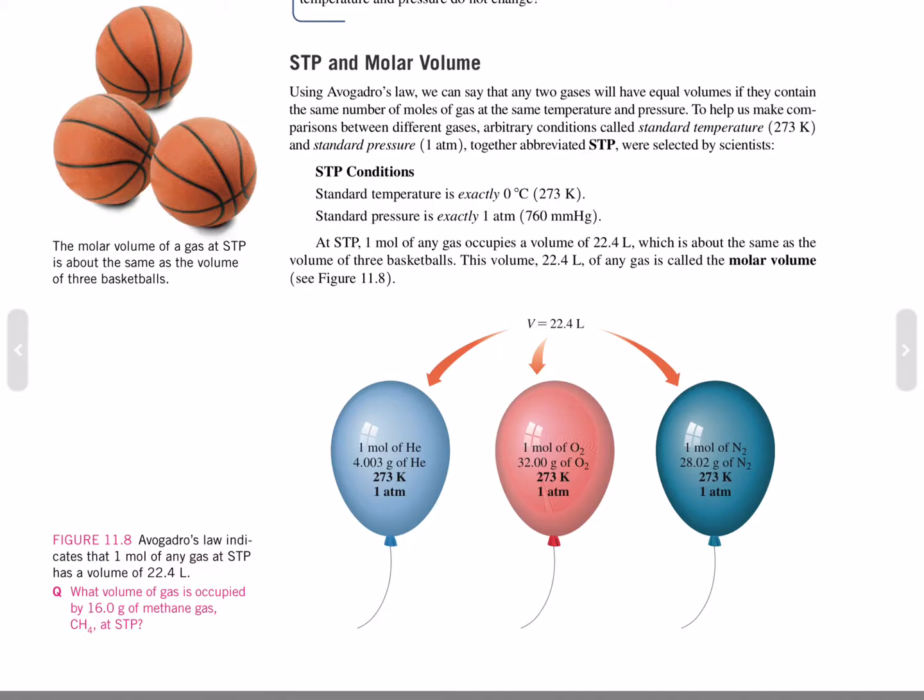STP conditions: Standard temperature is exactly 0 degrees Celsius, which is 273 degrees Kelvin. Standard pressure is exactly 1 atmosphere, at 760 millimeters mercury. At STP, 1 mole of any gas occupies a volume of 22.4 liters, which is about the same as the volume of three basketballs. This volume, 22.4 liters of any gas, is called the molar volume.